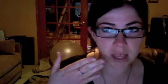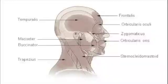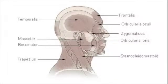The buccinator is a thin quadrilateral muscle occupying the interval between the maxilla and the mandible at the side of the face. Its purpose is to pull back and angle the mouth and flatten the cheek area. It also aids in whistling.